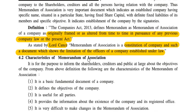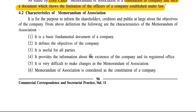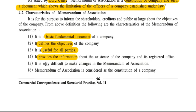Now the characteristics of Memorandum of Association. From the above definition, the following are the characteristics of MOA: (1) It is a basic fundamental document of the company; (2) It defines the objective of the company; (3) It is useful for all parties; (4) It provides information about the existence of the company; (5) It is very difficult to make changes in the Memorandum of Association; (6) MOA is considered as the constitution of a company.